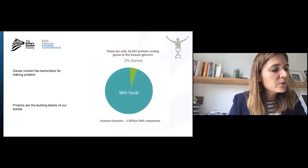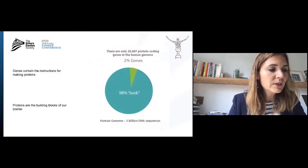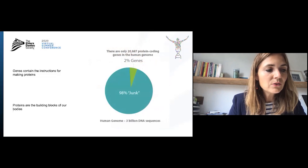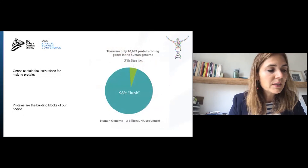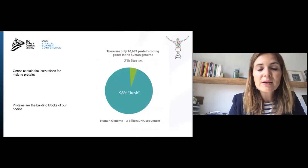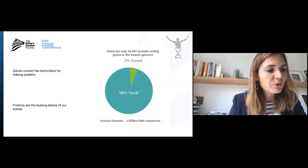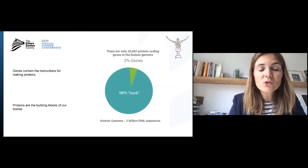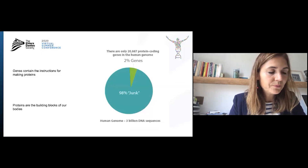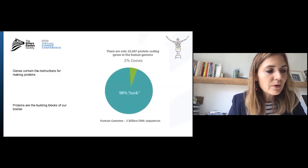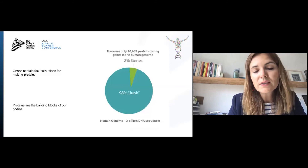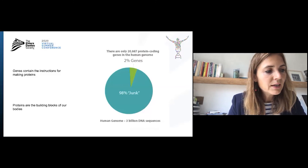Humans have about 21,000 protein-coding genes in their genome. However, this only constitutes about 2% of our total genome. The other 98%, sometimes referred to as junk DNA, does not code for protein, and the function and importance of this junk DNA is not well understood. The majority of defects leading to hereditary disorders, however, are currently found in the protein-encoding part of our DNA, that is, in or in close proximity of the genes.